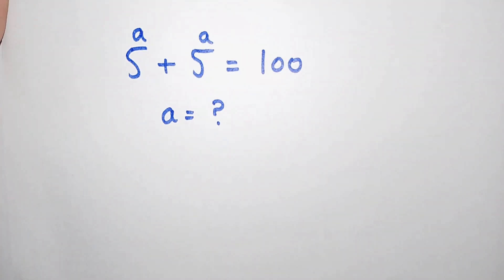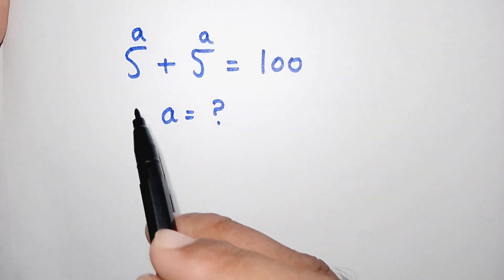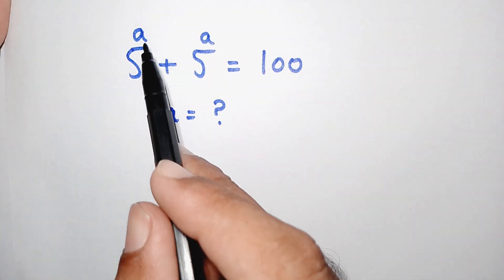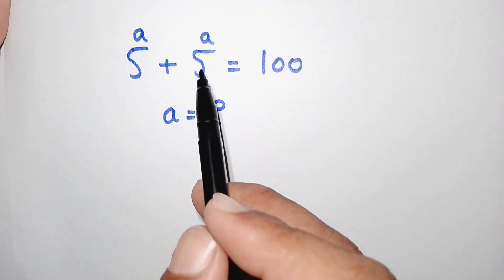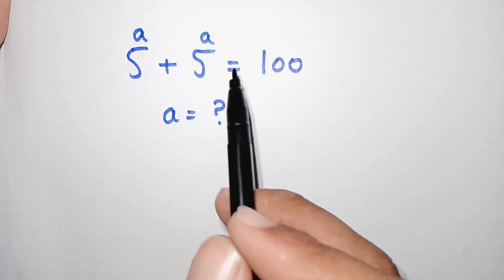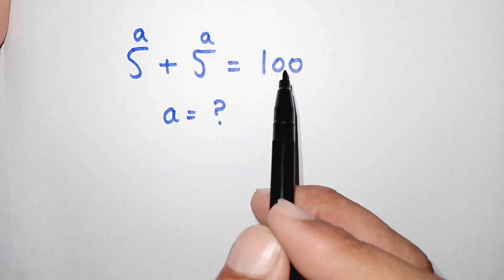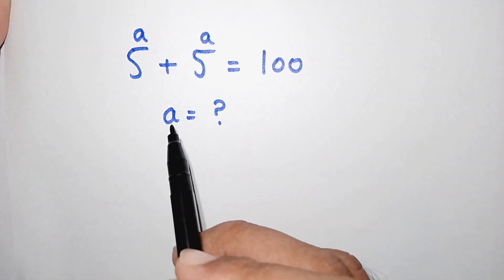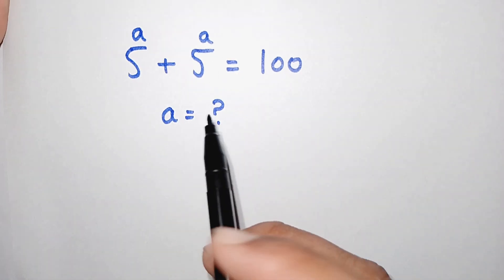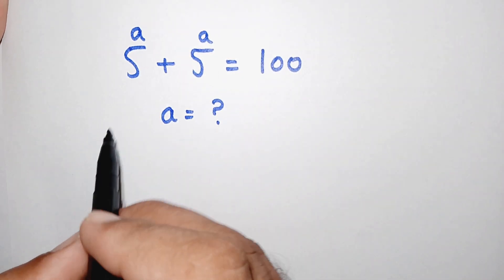Hello, you are welcome. How to solve this interesting maths question: 5 to the power of a plus 5 to the power of a is equal to 100, and we have to find the value of a.